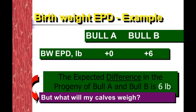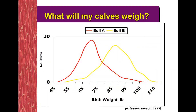Here's a birth weight example: Bull A has a birth weight EPD of zero, Bull B is plus six — an expected difference of about six pounds. To know how much your calves will actually weigh, check with the producer you're buying from. The EPD just tells you the difference between bulls — it doesn't give you an exact birth weight. We can compare bulls and expect to see the difference in birth weight and weaning weight. Bull A would have heavier calves than Bull B.